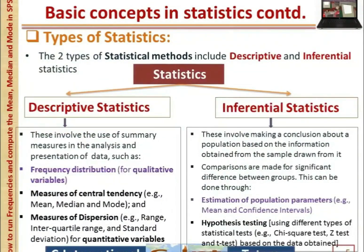The two types of statistical methods include descriptive and inferential statistics. Descriptive statistics involve the use of many measures in the analysis and presentation of data, such as frequency distribution for qualitative variables, and measures of central tendency and dispersion for quantitative variables. Inferential statistics involve making a conclusion about the population based on information from the sample, through estimation of population parameters and hypothesis testing.